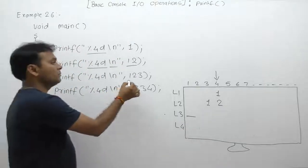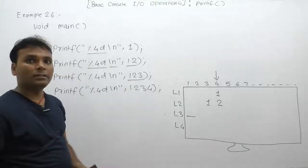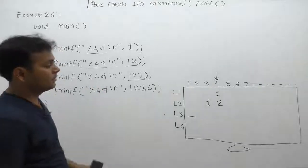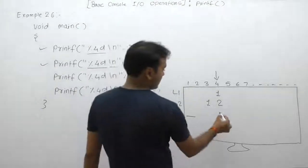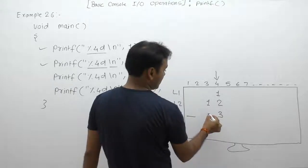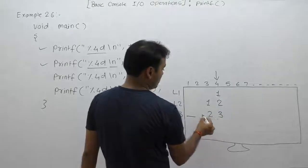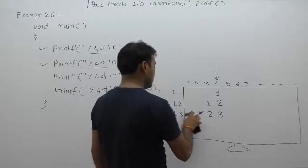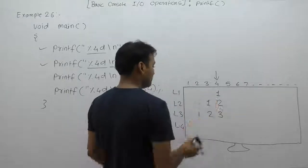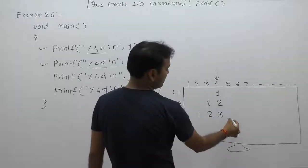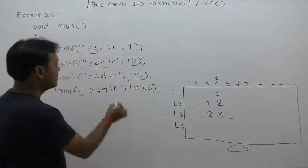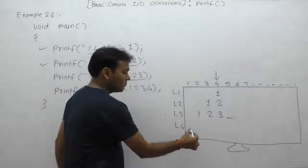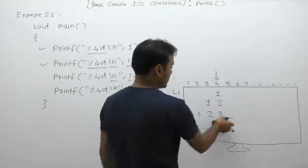Next, we display the three-digit number 123 in a width of four: three, two, one. Only one space is filled. The cursor is then on the fifth position, but due to `\n`, the cursor moves to the fourth line.